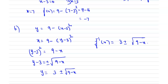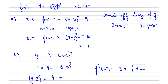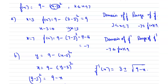Finally, we find the domain and range of f inverse. The domain of f inverse is the range of f, which is -7 ≤ x ≤ 9. The range of f inverse is the domain of f, which is 3 ≤ f⁻¹(x) ≤ 7. Hence the domain and range of f inverse are calculated.